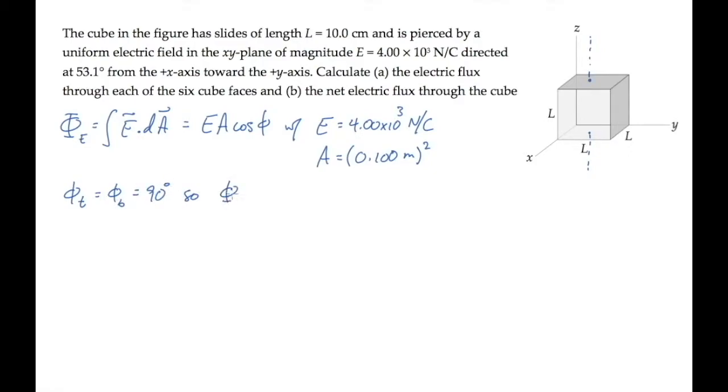The electric field is in the xy plane, so it is perpendicular to both of those normal directions. Cosine of 90 equals zero. This means that there is no electric flux through either the top or the bottom faces.